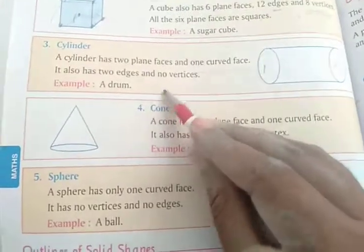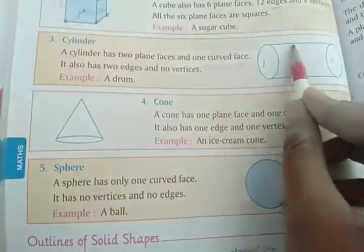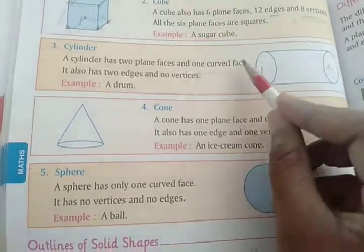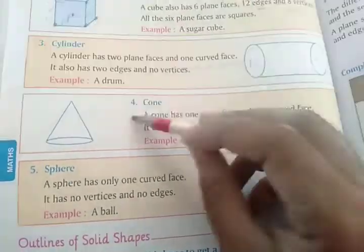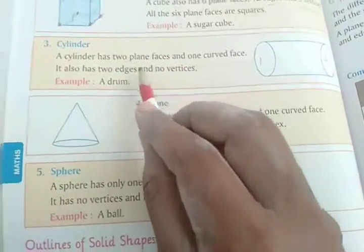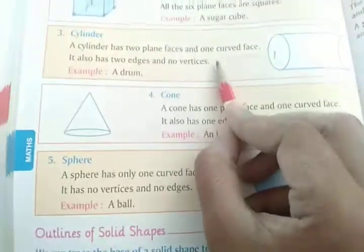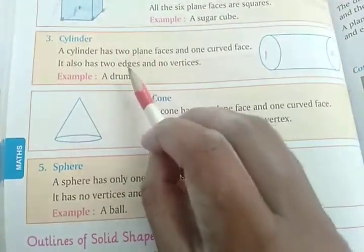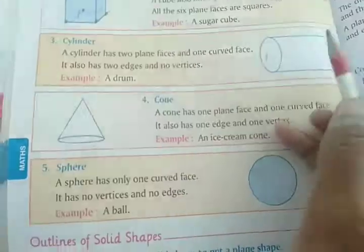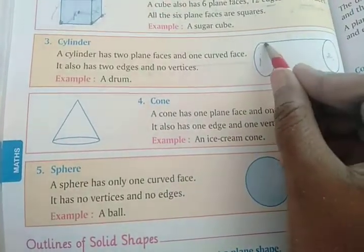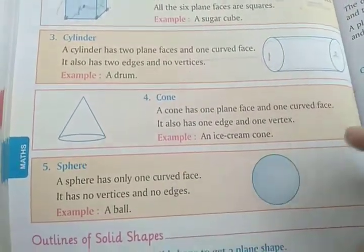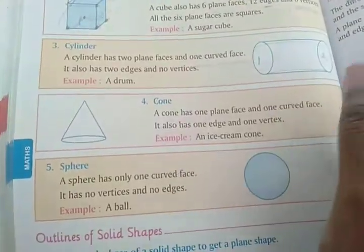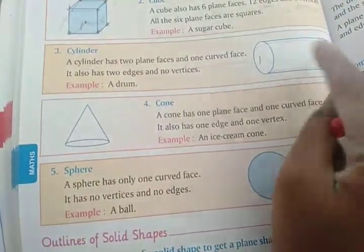Cylinder میں کوئی vertices نہیں ہے کیونکہ اس میں lines joint نہیں ہوتیں۔ It has two edges and no vertices — یہ two edges اوپر اور نیچے کے circular edges ہیں، circle جیسے۔